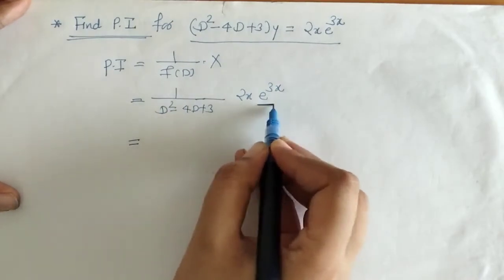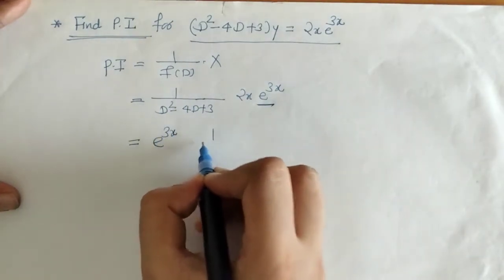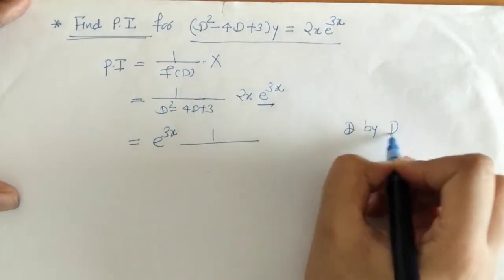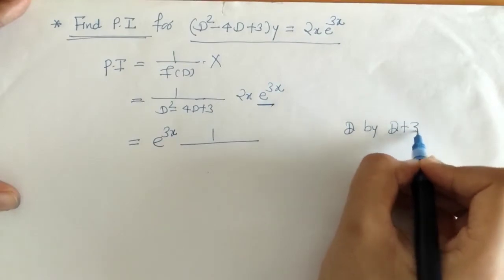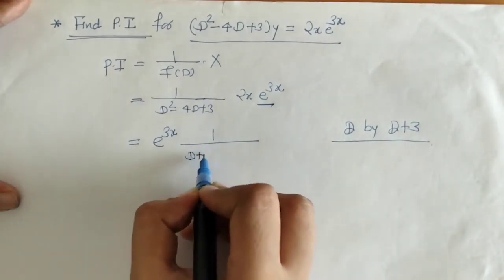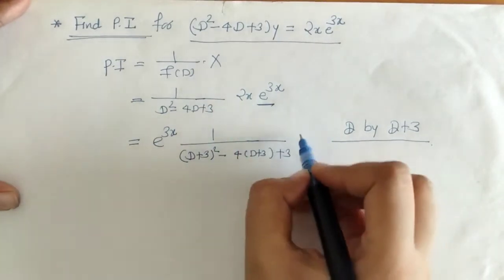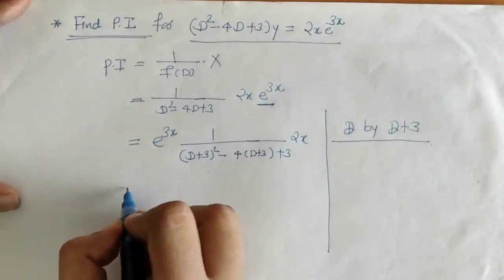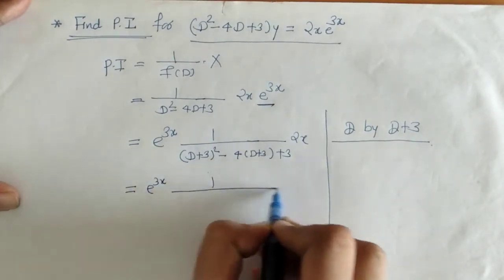We will take e raised to 3x outside and at the same time we will replace this D by D plus a. Here a is 3. So we will write that down and the remaining term is 2x.